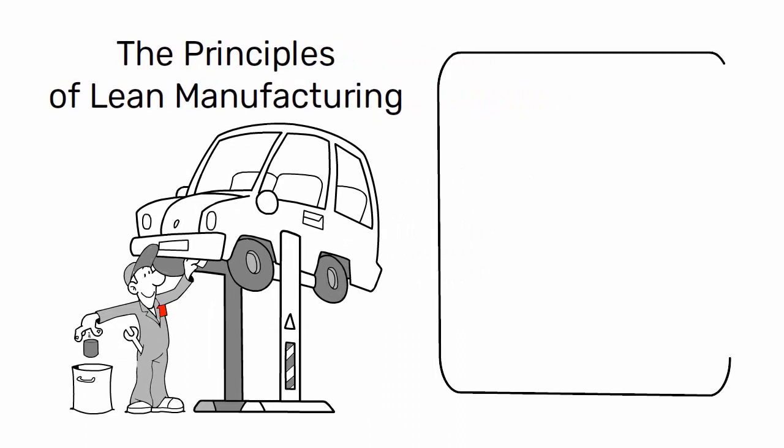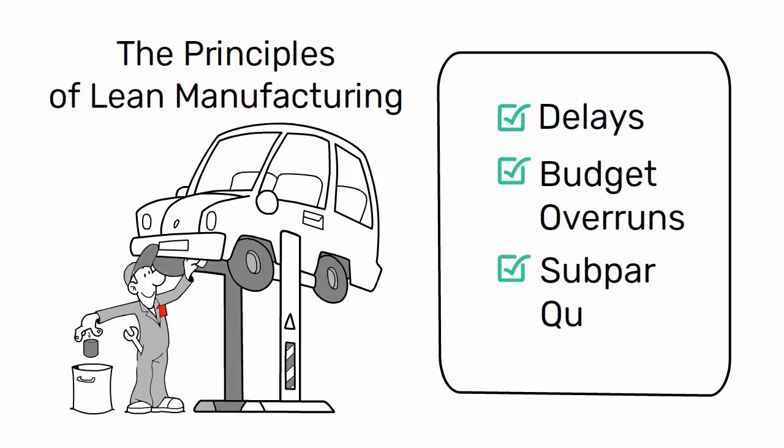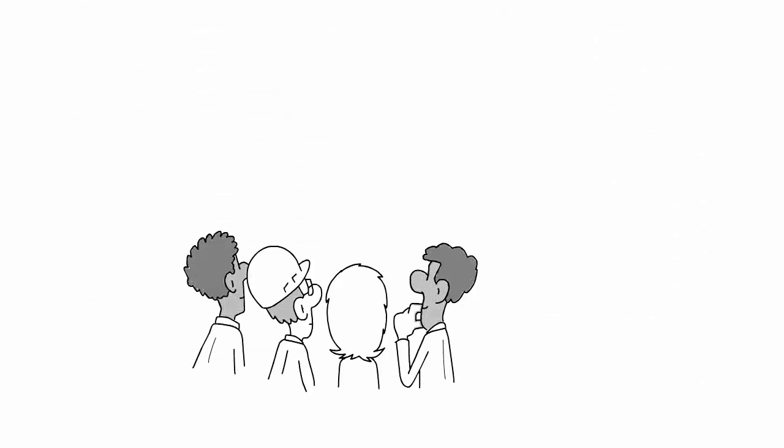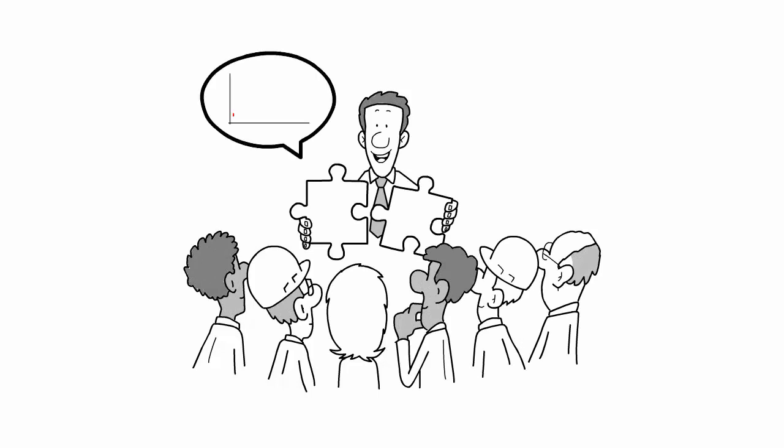In traditional construction, projects often suffer from delays, budget overruns, and subpar quality. Lean construction aims to solve these problems by focusing on continuous improvement and maximizing value for the customer.